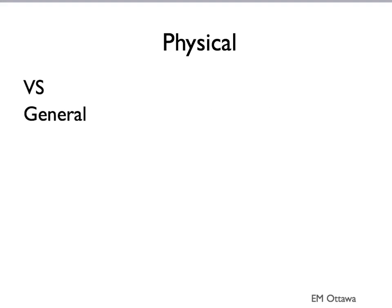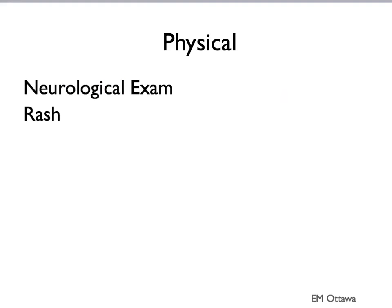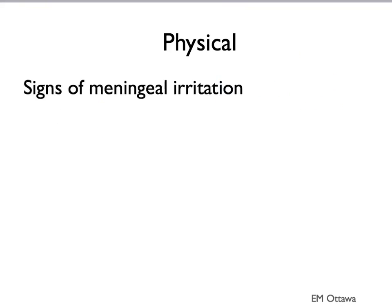On physical examination, we pay special attention to vital signs. Patients may have fever or signs of sepsis such as tachycardia or hypotension. In general, they may look well particularly if early in their disease, or very unwell if late in the course. On neurological examination, we look for focal neurological signs and papilledema. We also look for rashes, particularly purpura. On examination, we also look for any signs of meningeal irritation.